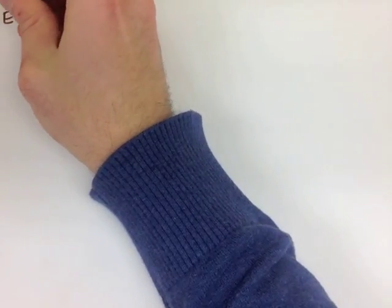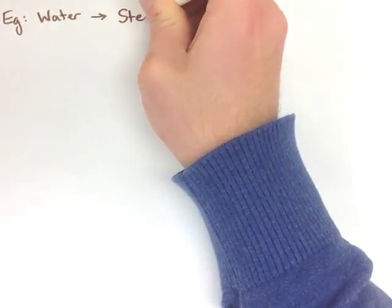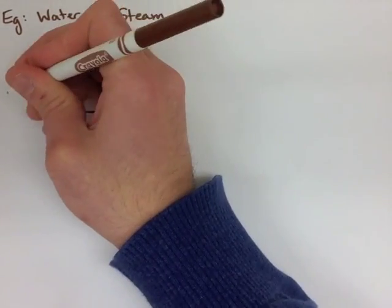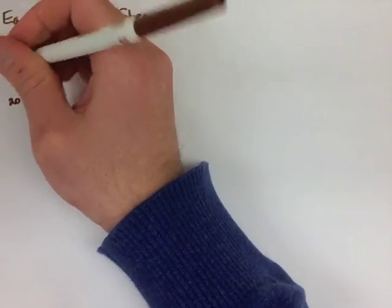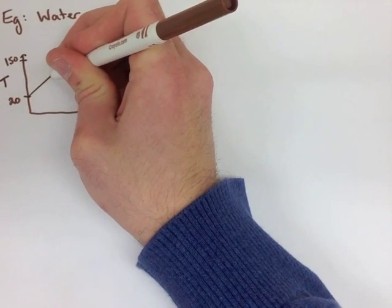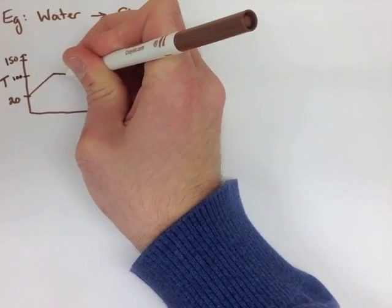Let's look at the first example, where we're changing 2.5 kilograms of water at 20 degrees Celsius to 150 degrees Celsius and making it steam.